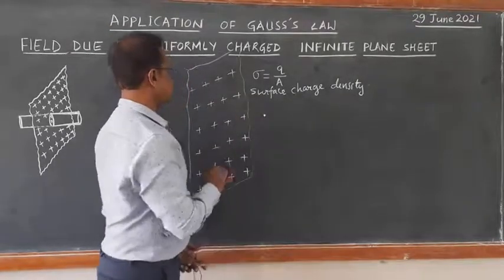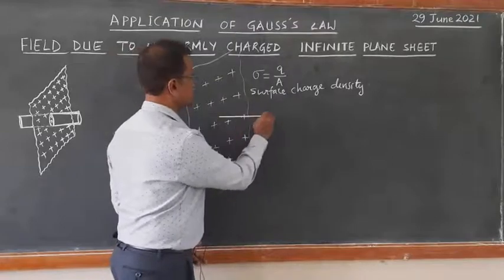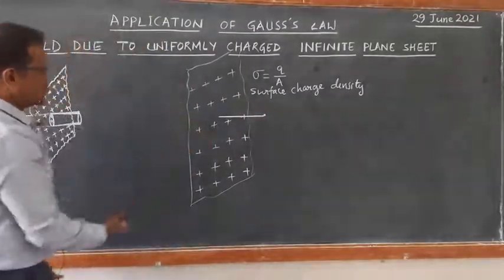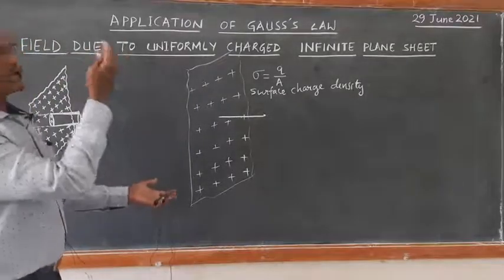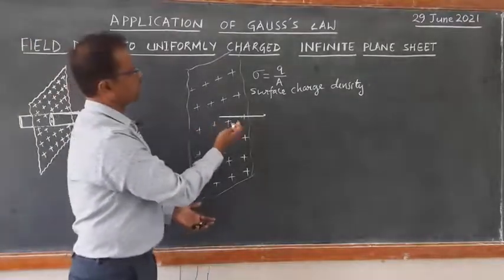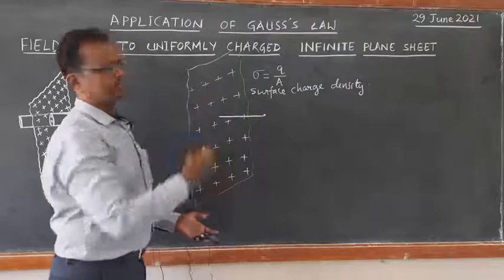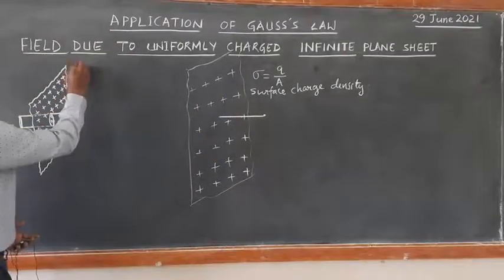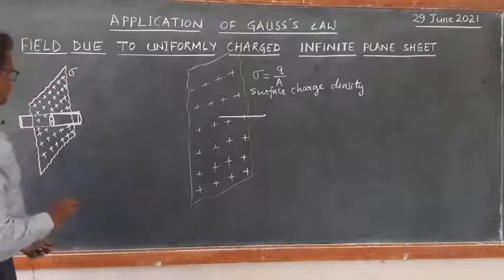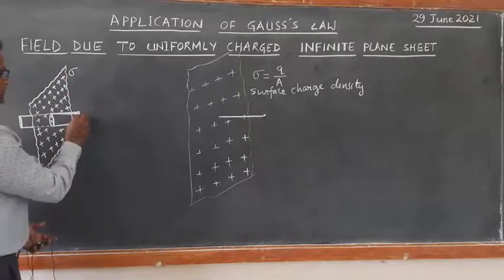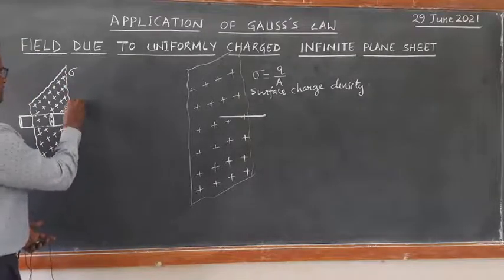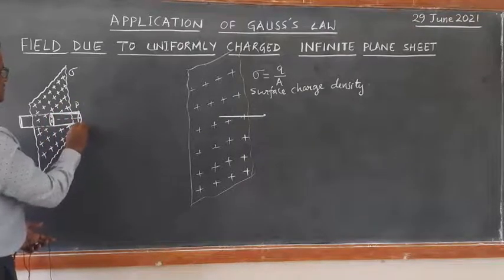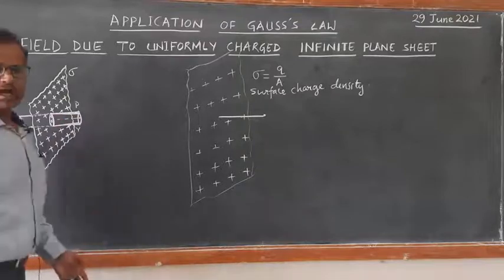We want to find the electric field at a perpendicular distance r from the sheet. I have taken a part of this infinitely, uniformly charged infinite plane sheet, and the charge density is denoted by sigma. I want to find the electric field at a point P at a distance r.